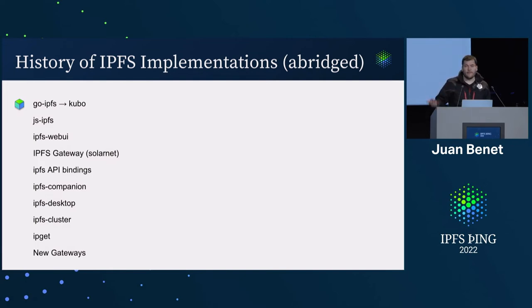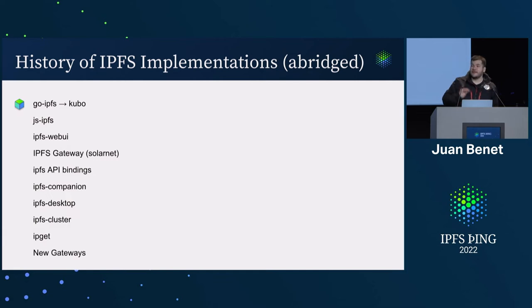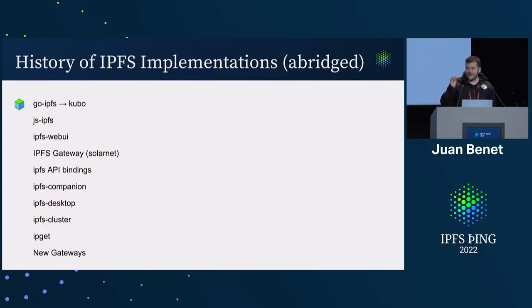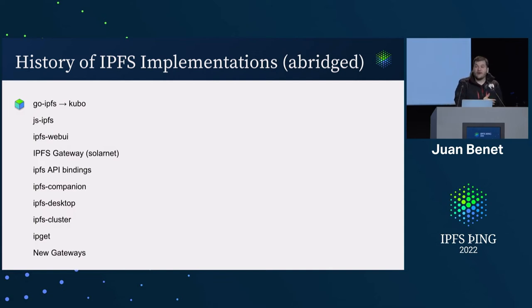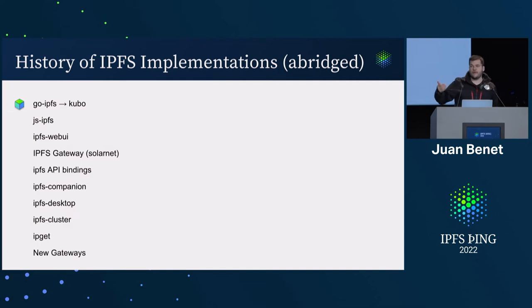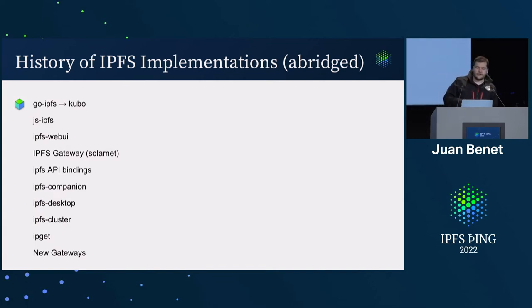Then we got IPFS Companion, which managed to bridge the experience with browsers. Then Desktop to make the web UI packaging much nicer. Then Cluster, a way to coordinate large numbers of IPFS nodes. Then tools like IPGAD, very lightweight implementations — there were a lot of other tools like that. Then a whole slew of new gateways, as many groups and organizations started hosting their own versions using the traditional gateway code, sometimes patching it or adding new features. Many early pinning services and groups like Cloudflare deployed their own gateways.